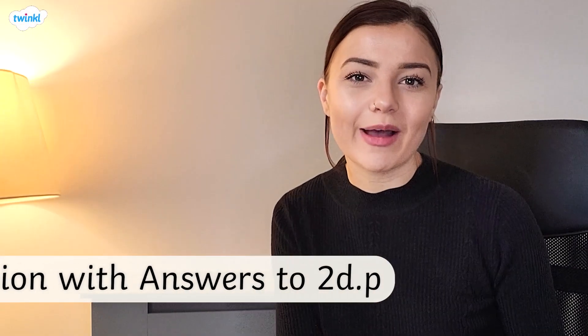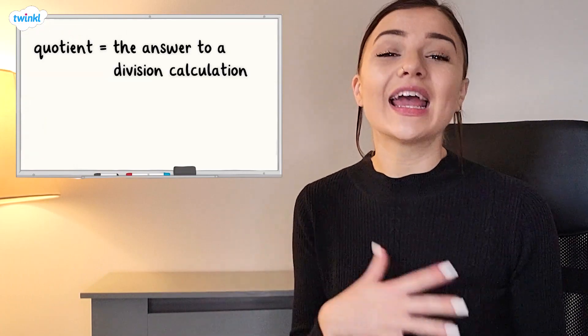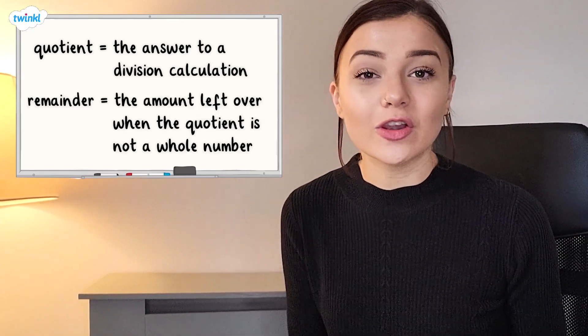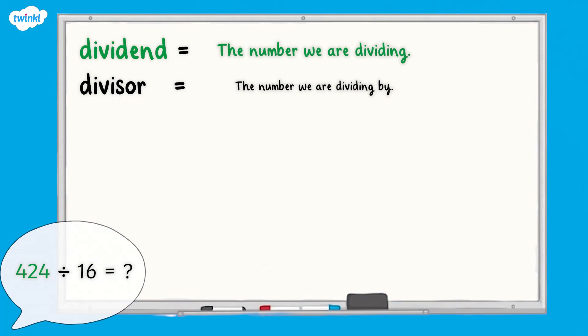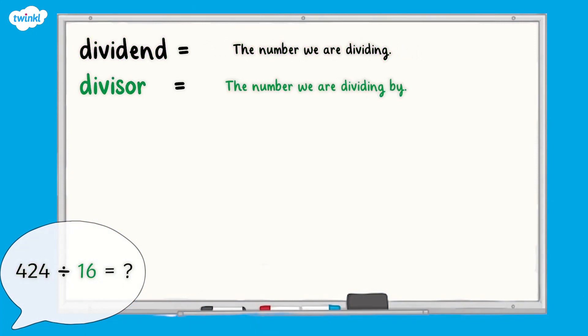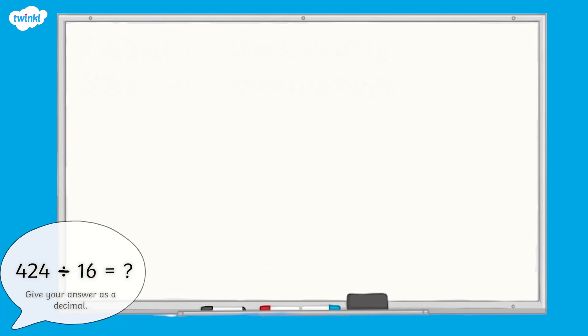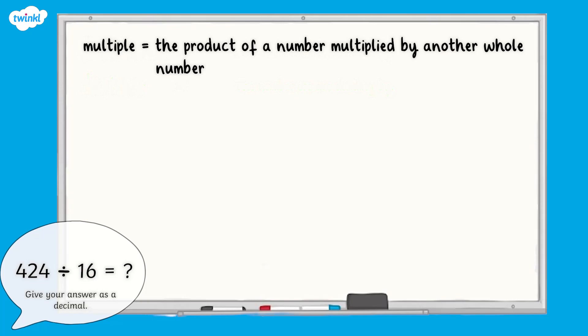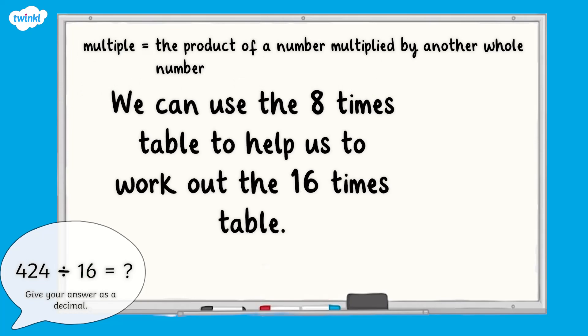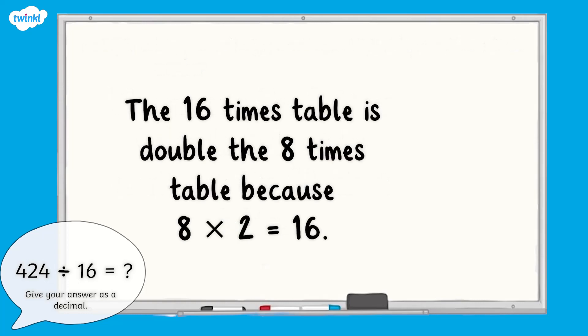This video is here to show you how to use the long division method giving the answer as a decimal. When the quotient or answer to a division calculation is given as a decimal, the remainder is regrouped as a decimal in the same way that the whole numbers are. Let's start by using the long division method to divide 424 by 16. Our dividend is 424 and we are dividing by 16, so 16 is our divisor. When we divide by a two-digit number, it's a good idea to list the first multiples of our divisor up to ten times. To find the multiples of 16, we could use our knowledge of the eight times table — if we double 8, we get 16, so we can double the eight times table to get the 16 times table. Here are the multiples of 16 up to ten times 16.